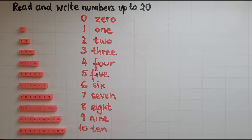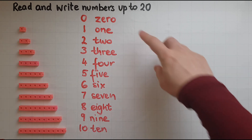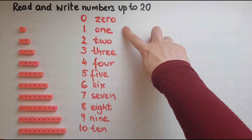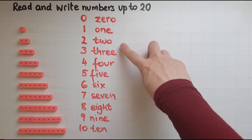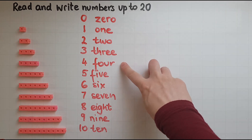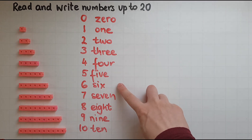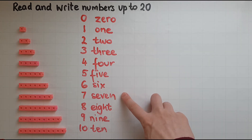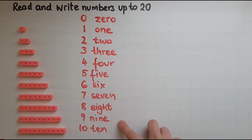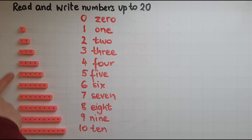So again we have zero, one, two, three, four, five, six, seven, eight, nine, ten — which are represented by the number of cubes on this side.